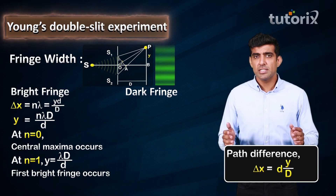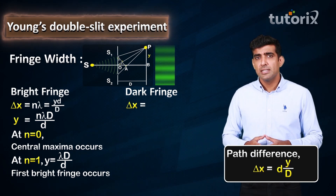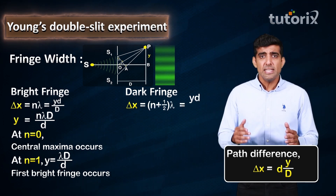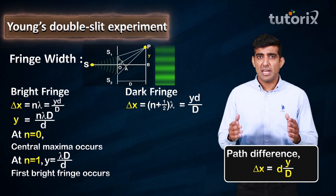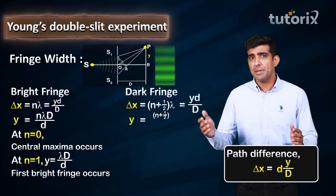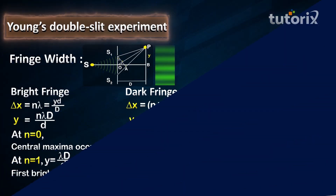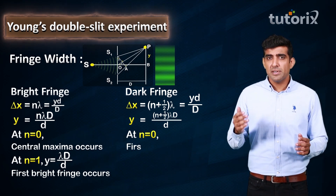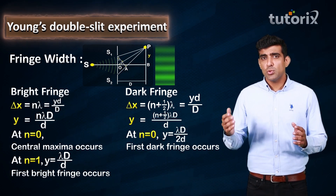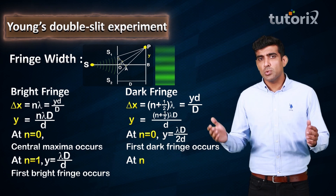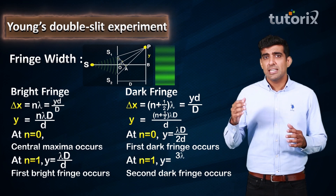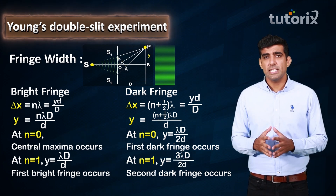For a dark fringe, the path length difference can be written as (n + ½)·lambda, which is also equal to y·d/D. Therefore, y = (n + ½)·lambda·D/d. When n = 0, the first dark fringe occurs at lambda·D/(2d). When n = 1, the second dark fringe occurs at 3·lambda·D/(2d).